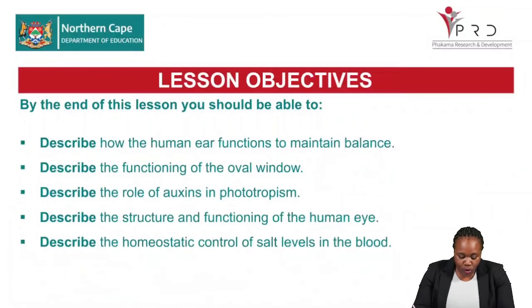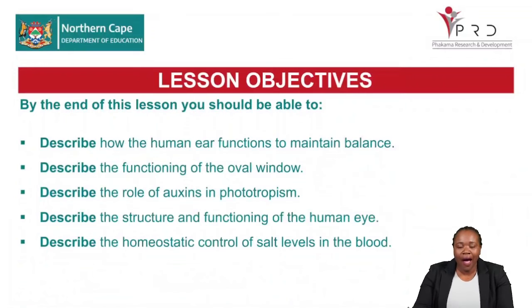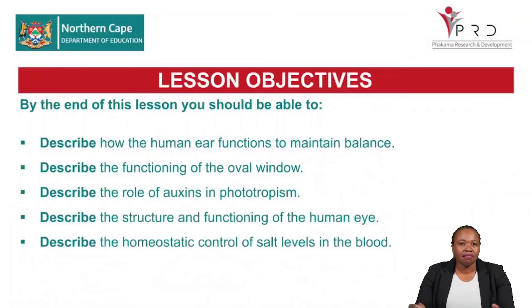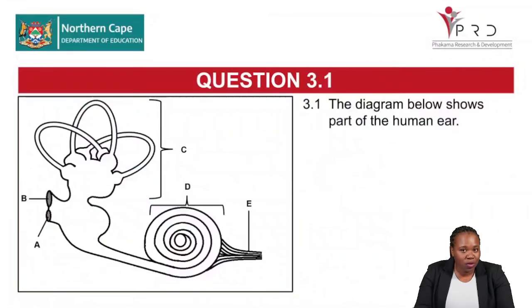You should also be able to describe the homeostatic control of salt levels in the blood. We will look at the hormone responsible for this, the part that secretes it, and how the hormone functions to keep salt levels constant. Now let's have a look at our first question — Question 3.1, which is the structure of the human ear.